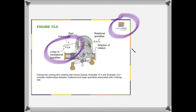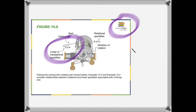This slide shows the relationship between quantities in linear motion and rotational motion. Displacement x corresponds to angular displacement theta; linear velocity v corresponds to angular velocity omega; linear acceleration a corresponds to angular acceleration alpha. This is well illustrated by a fishing reel: as the fishing line is pulled out, that is linear motion, but the reel begins to spin, which is rotational motion — showing that they are connected.